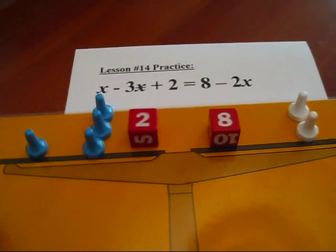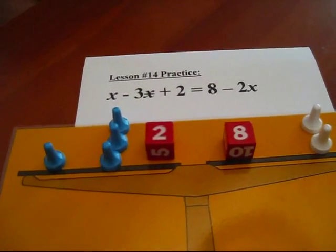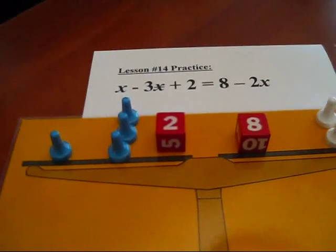Okay, so you now have the original physical setup of this example. How would you solve it, please? Do a legal move. Okay, go ahead. Add a blue pawn to each side.